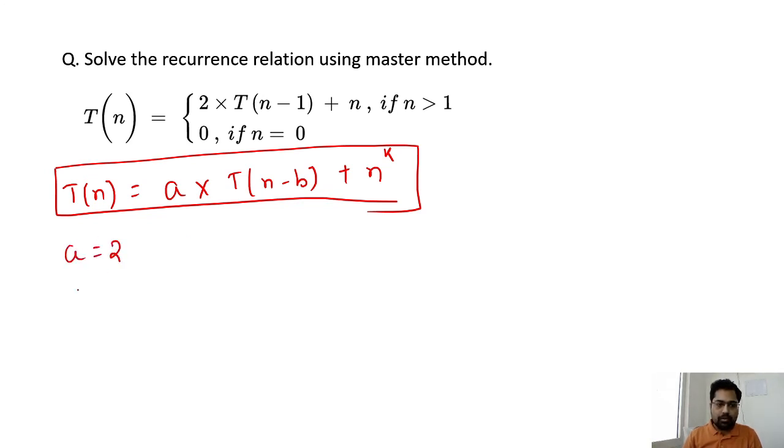As per this, a is 2, b is 1, next k is 1. This is the value of k. Here, this is the value of b. Here, this is the value of a.